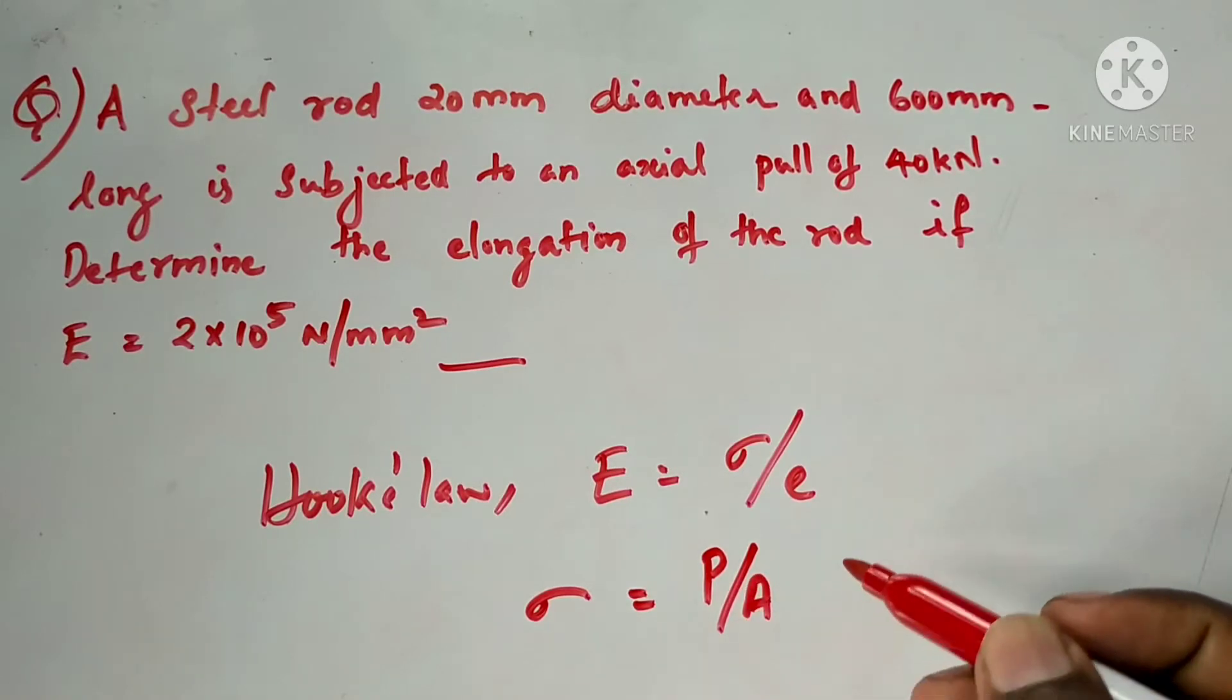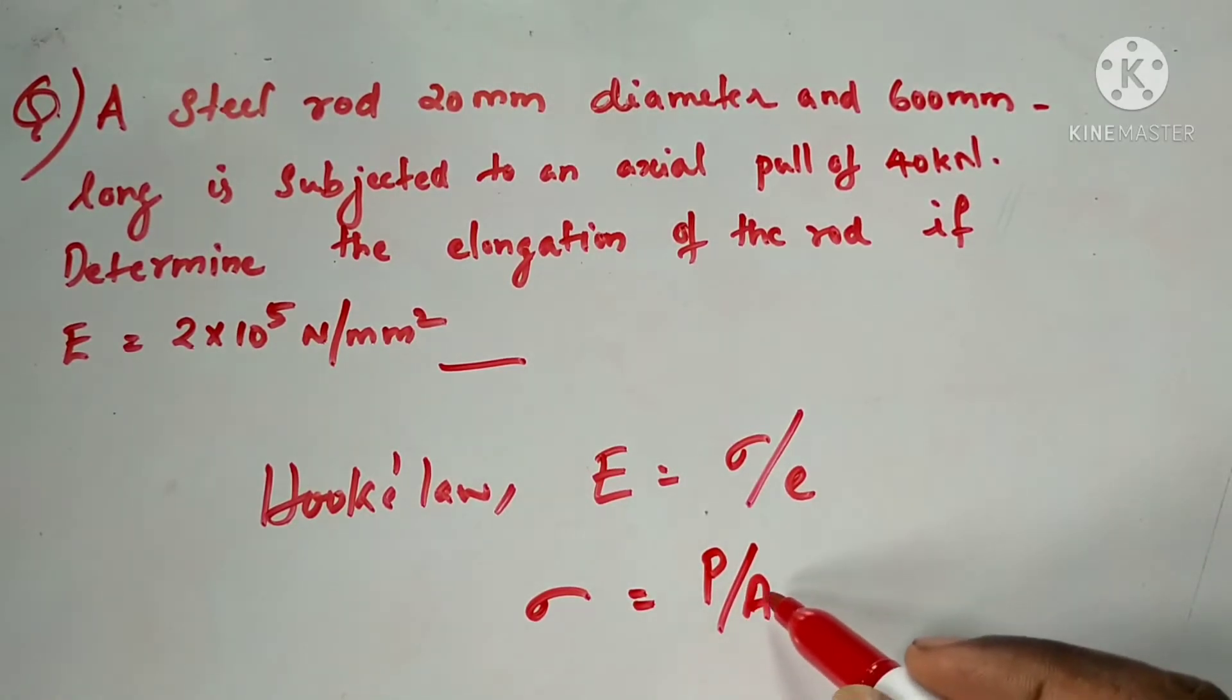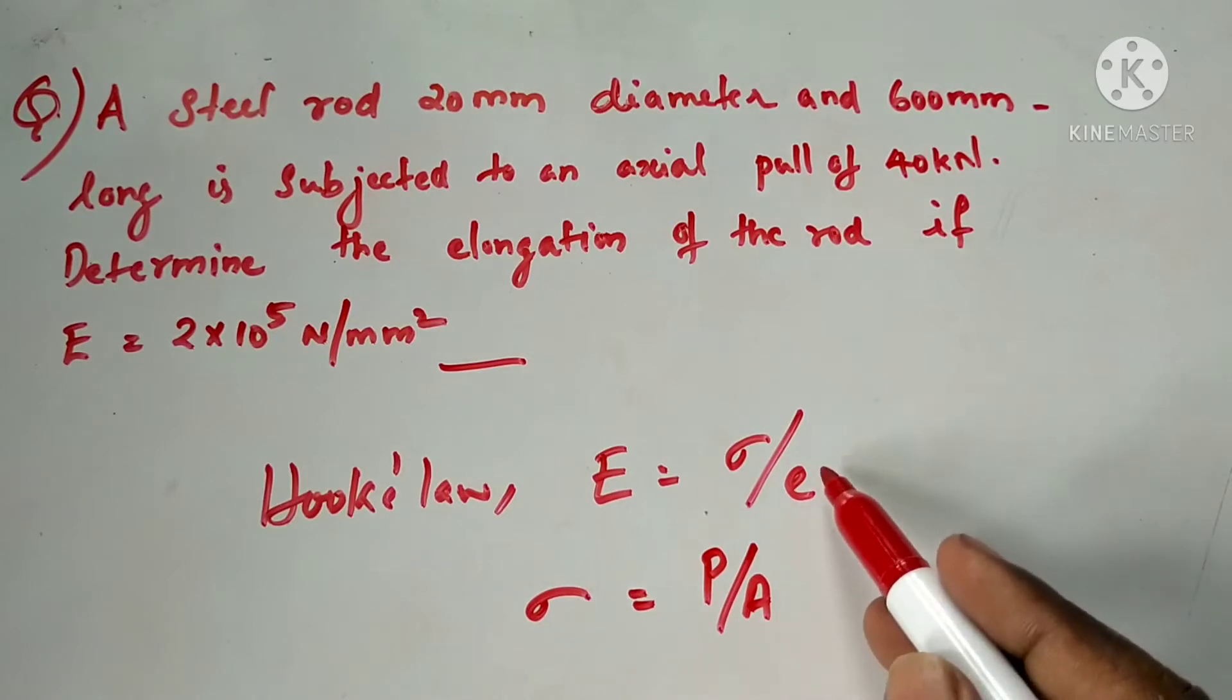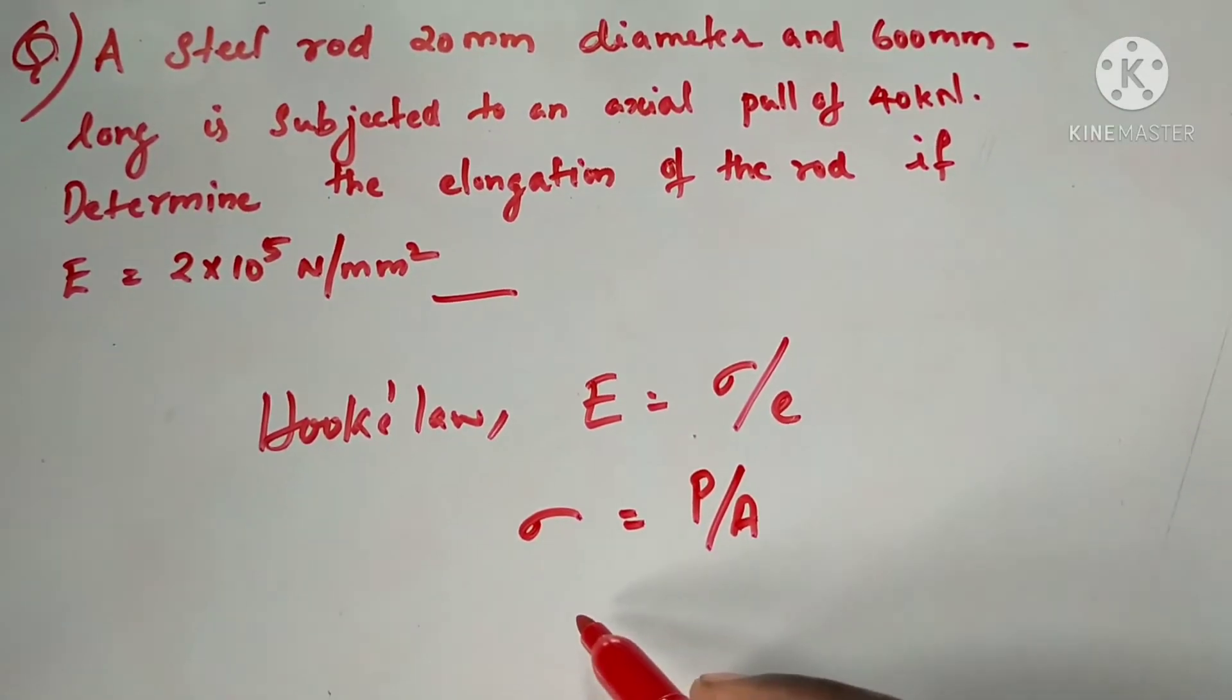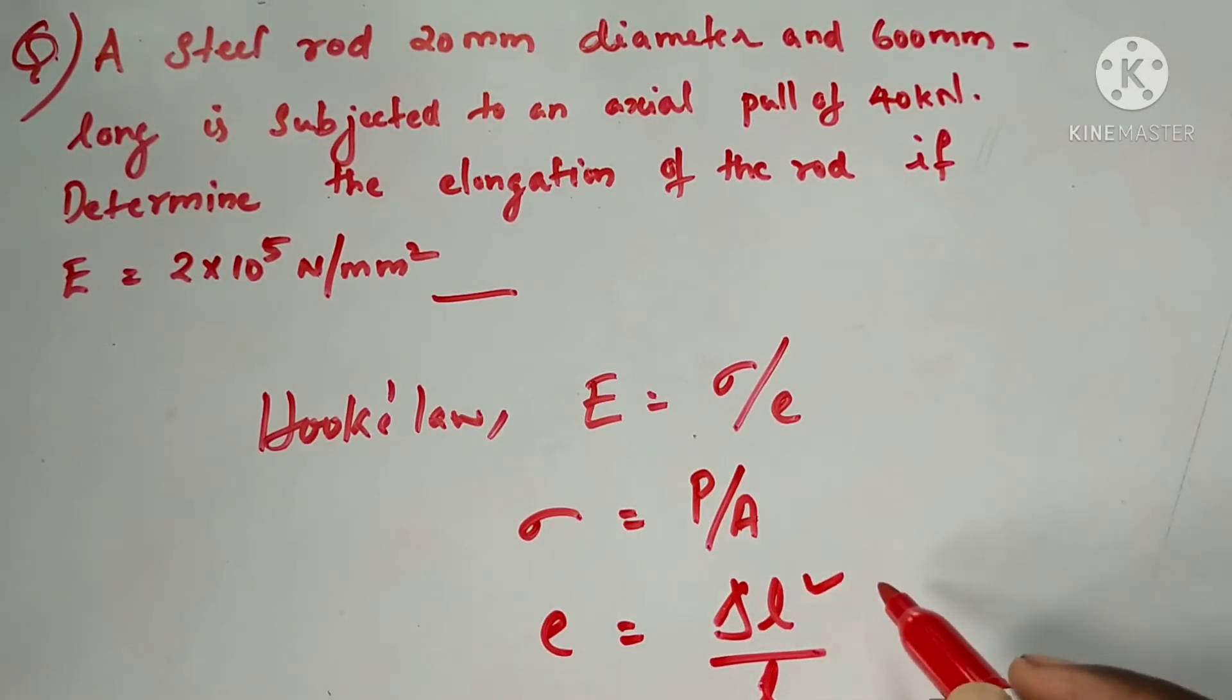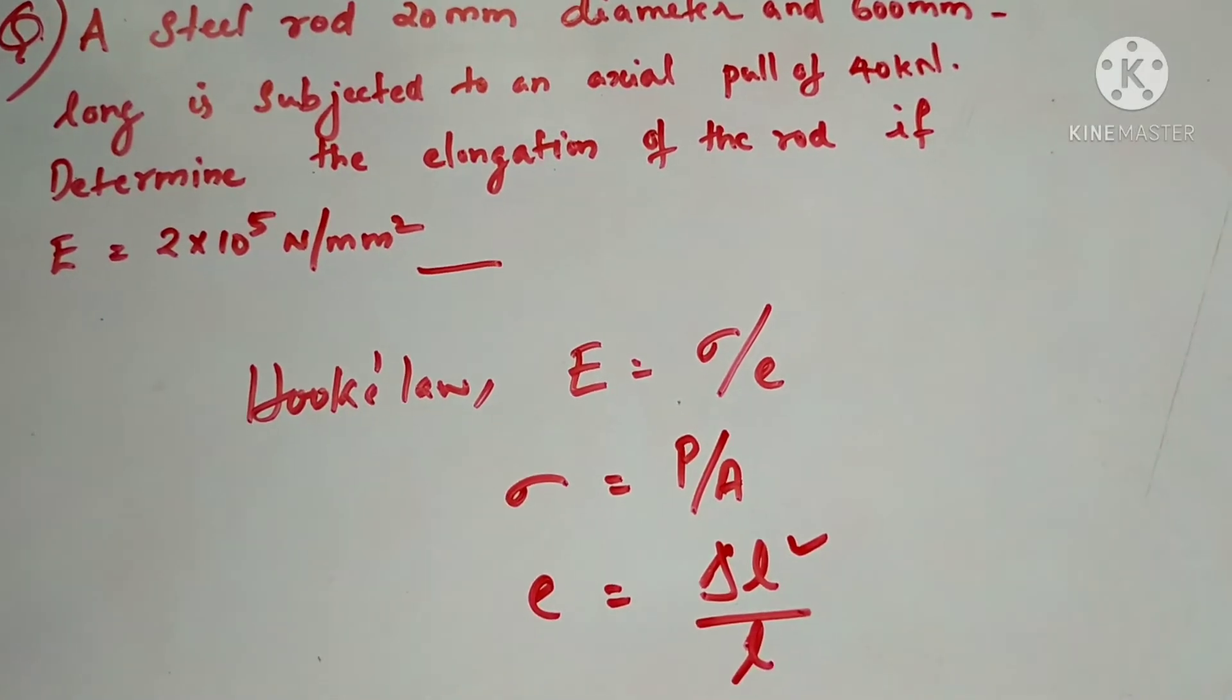Load divided by area of cross section equals P by A. Strain is change in length divided by original length. Change in length equals ΔL. That's what we have: elongation.